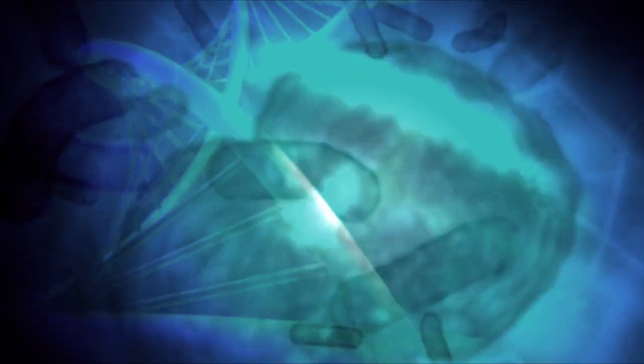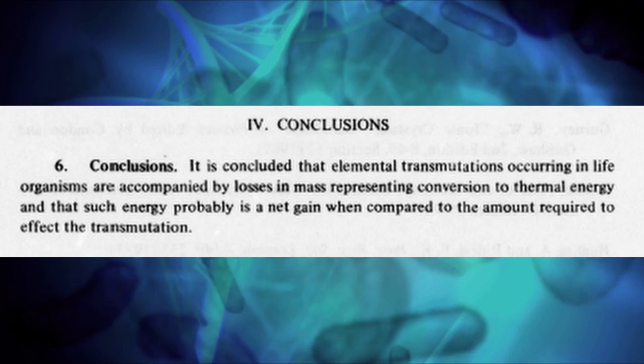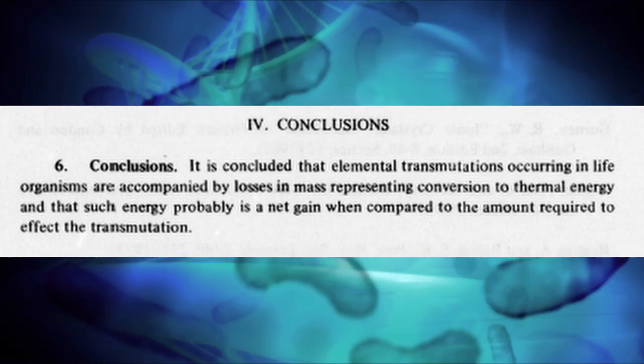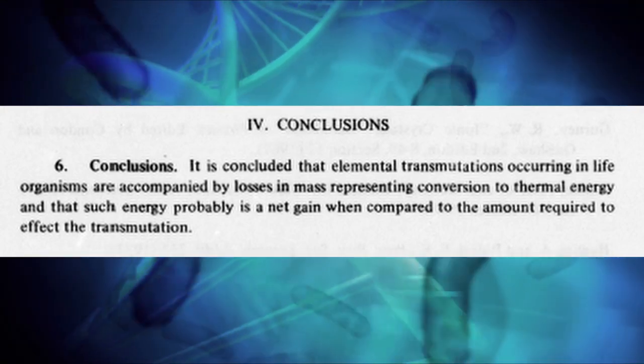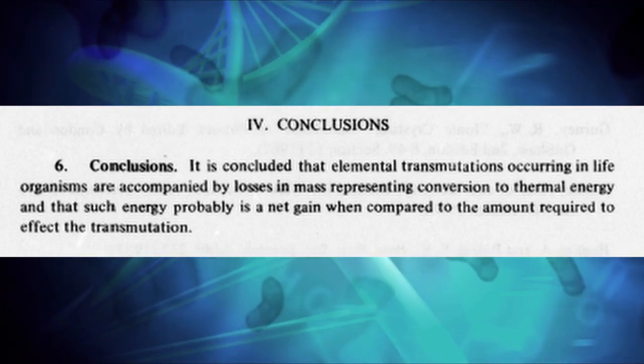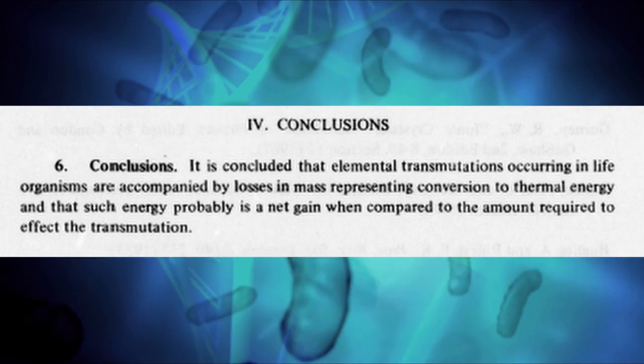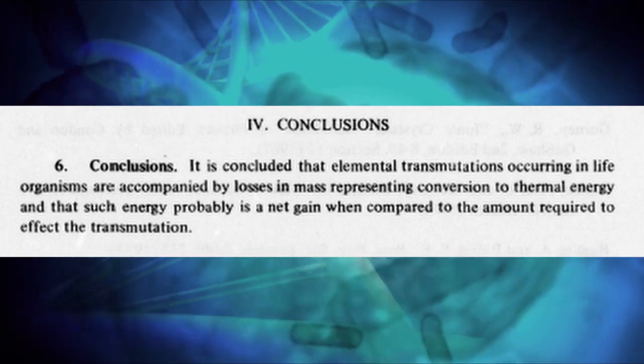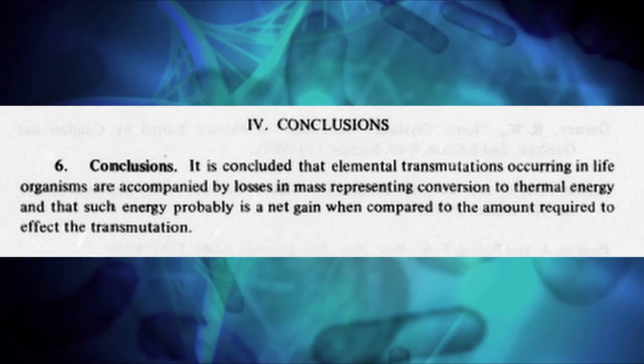The report ends with this final conclusion. It is concluded that the elemental transmutation occurring in life organisms are accompanied by a loss in mass representing conversion to thermal energy and that such energy probably is a net gain when compared to the amount required to affect the transmutation.